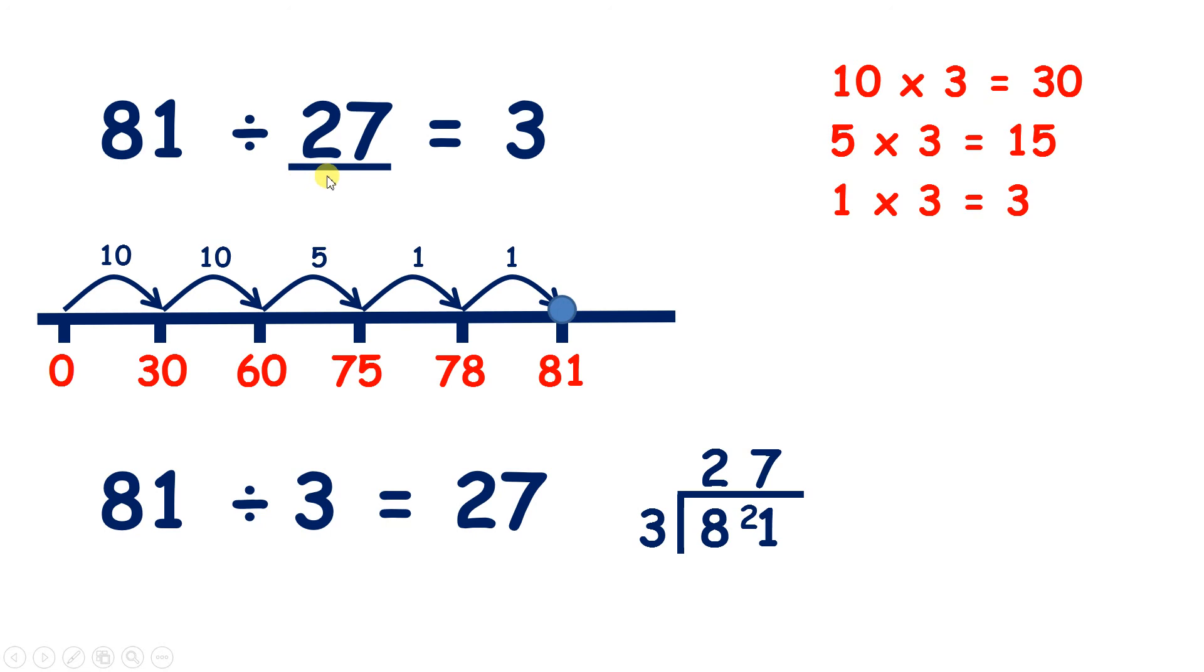So with division, when you have a missing divisor, you can divide your dividend by your quotient to find the missing number.